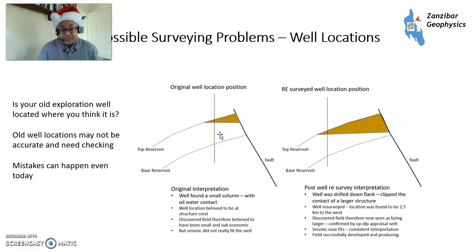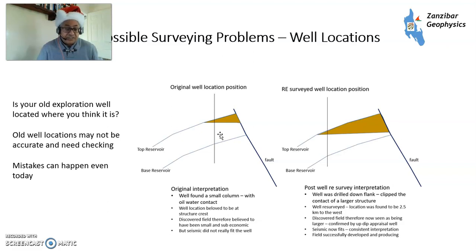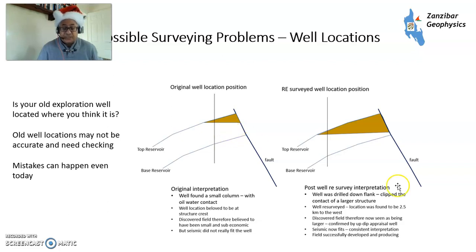So old well locations may not be accurate and need checking. On land that's fairly easy — you just go to the well location with a GPS device and check it. At sea it's a little bit harder; you might need magnetometer surveying, but it's something to have a look at.